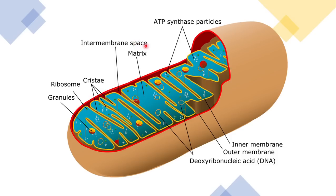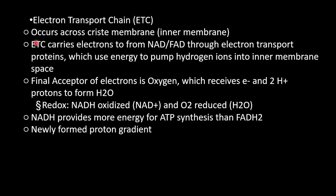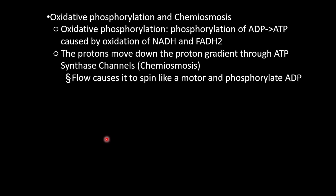The electron transport chain occurs on the inner mitochondrial membrane (the cristae membrane). It carries electrons from NADH and FADH2 through transport proteins, which use that energy to pump hydrogen ions into the inner membrane space, creating a concentration gradient. The final electron acceptor is oxygen, which receives electrons and two H+ protons to form water. NADH provides more energy for ATP synthesis than FADH2. The proton gradient drives oxidative phosphorylation — protons flow through ATP synthase, causing it to spin and phosphorylate ADP into ATP.